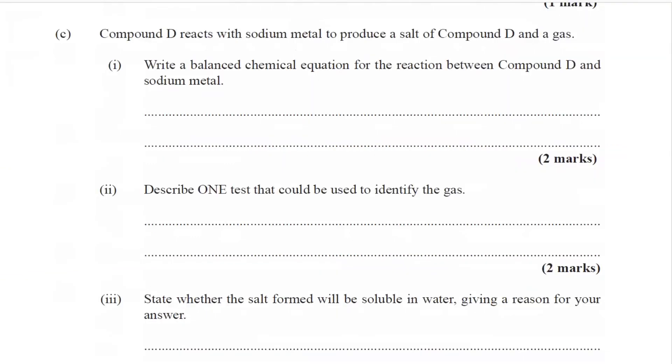Part C. Compound D reacts with sodium metal to produce a salt of compound D and a gas. Part one: Write a balanced chemical equation for the reaction between compound D and sodium metal. Wow. So we're getting reactions of organic compounds left, right, and center. So let's begin. Acid. So it's the same acid we've been using, compound D, CH3CH2CH2COOH. The liquid, and that's going to react with sodium, which is a solid.